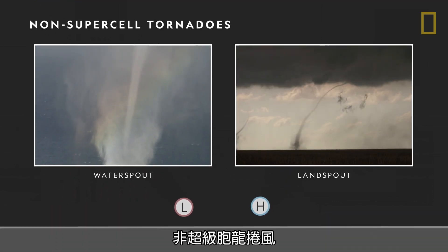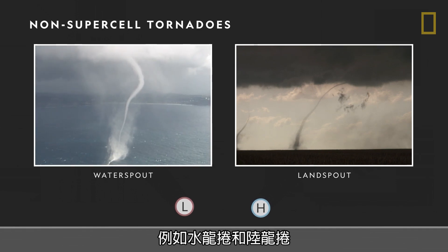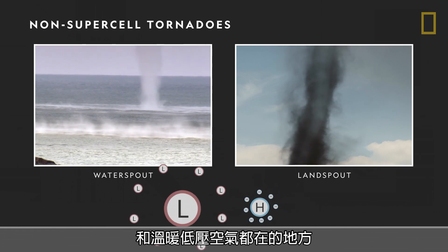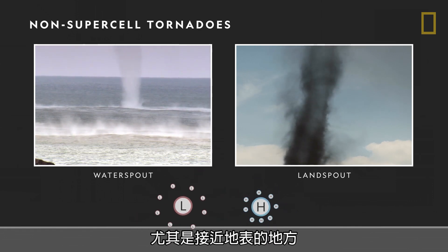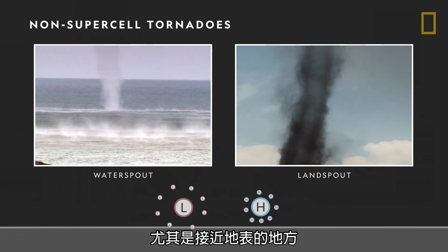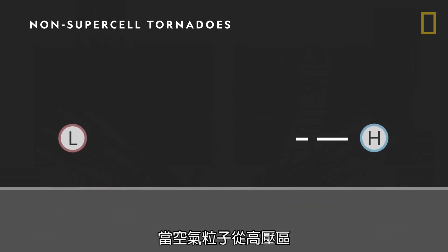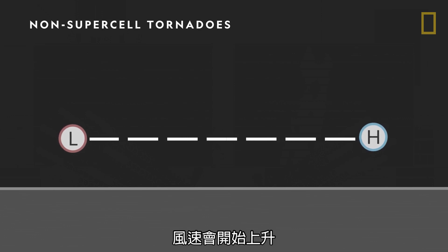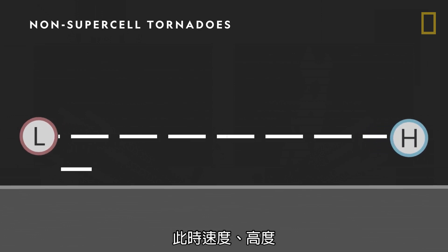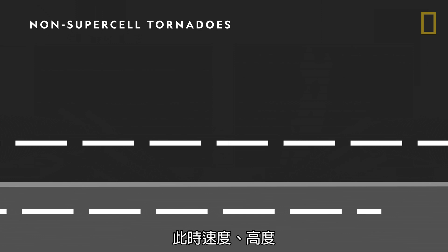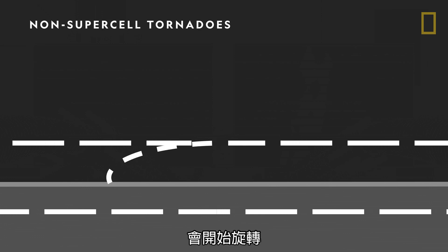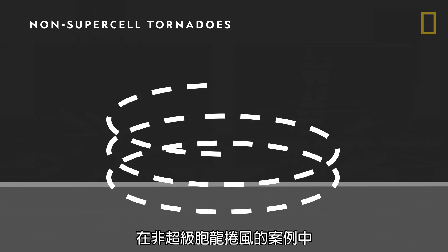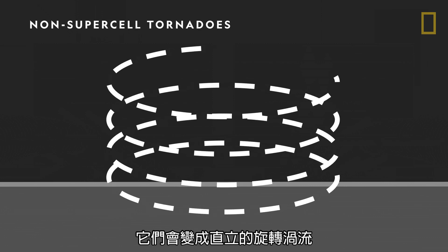Non-supercell tornadoes, such as water spouts and land spouts, begin when cool, high pressure air and warm, low pressure air are present, particularly near ground level. As air particles move horizontally from the high pressure area to the low pressure area, wind begins to pick up. Winds blowing at different speeds and in different directions and altitudes begin to blow cyclically, turning into an upright spinning vortex.